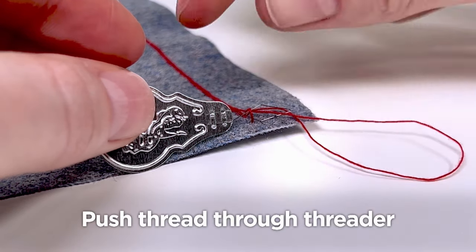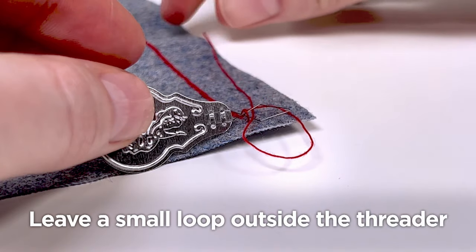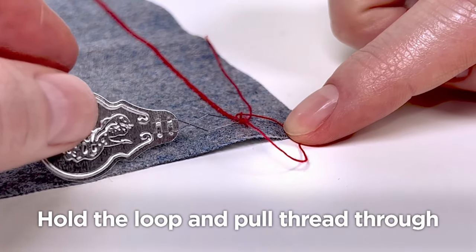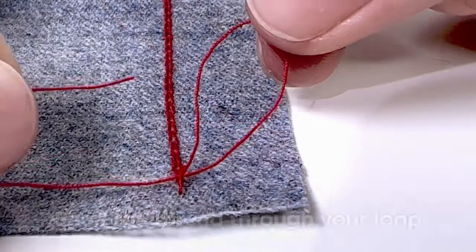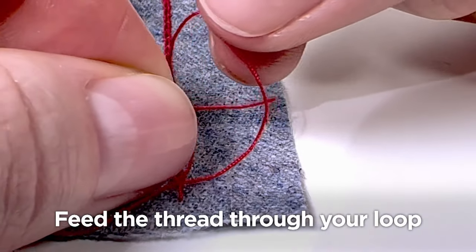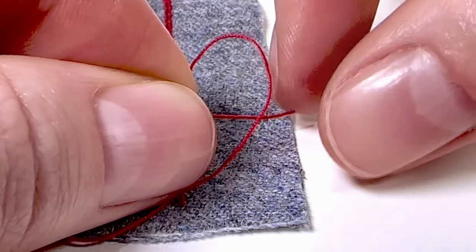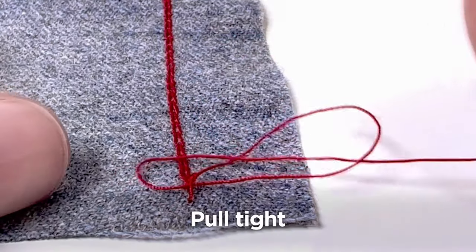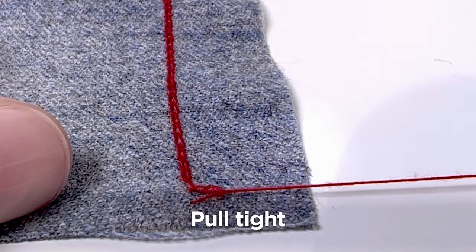By sliding your threader underneath the last stitch, and pushing the remaining thread through, except for the loop. Then pull the threader back under the stitch. Once you remove that thread, you need to pass it through the loop you previously created. Simply pull tight into a knot, and now you have extremely secure stitching.